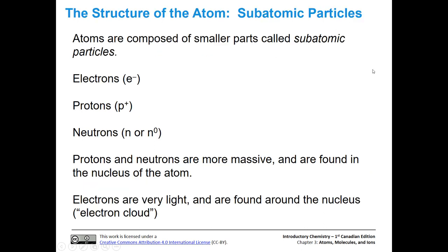Let's talk about the structure of the atom. The atom is composed of subatomic particles — particles smaller than the whole atom itself. One of those particles is called an electron, another a proton, and another a neutron. Protons and neutrons are bigger and more massive. They're found in the nucleus, compressed together. Electrons are very, very light in mass, found around the nucleus, forming an electron cloud.